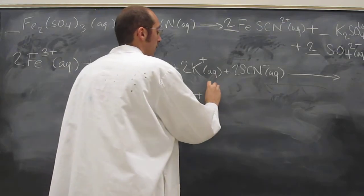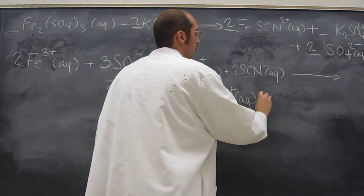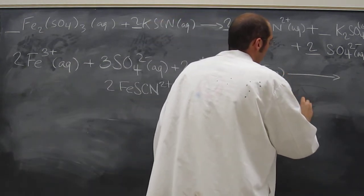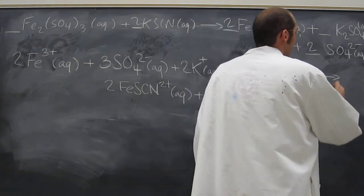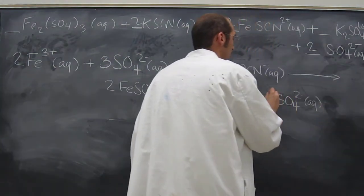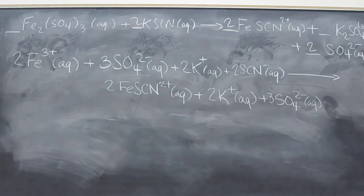Plus 2 K plus, aqueous, plus SO4 2 minus aqueous, plus 2 SO4 2 minus aqueous, so let's just put a 3 there. Is that alright? It's the same thing, adding 1 SO4 2 minus and 2 SO4 2 minus.